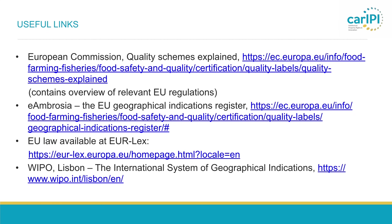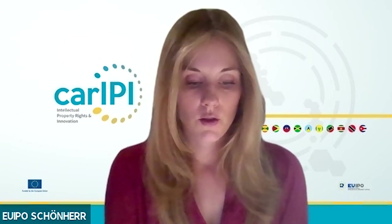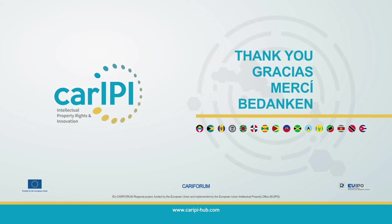Here are some useful links. The link to the European Commission's website — where you can find general information on the EU's quality schemes, links to the relevant regulations, and the list of GIs protected under bilateral agreements. The link to e-Ambrosia is also included again. The EUIPO will inform you once the new portal GI-View is online, and you will also get tutorials on how to use it. In case you are looking for specific information on EU law or want to consult specific EU regulations, the main source is EUR-Lex. And if you are more interested in the WIPO system, you can also consult their website.